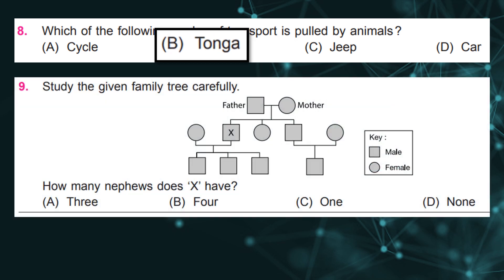Study the given family tree carefully. Here the square represents a male and the circle represents a female. How many nephews does X have? Answer: c, one.